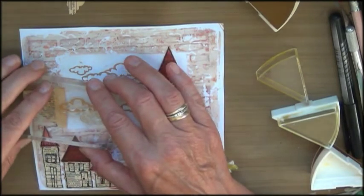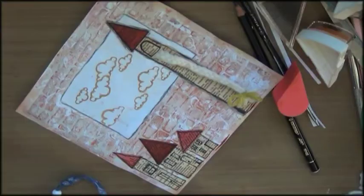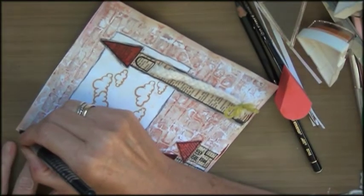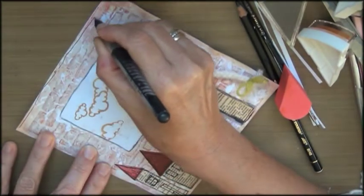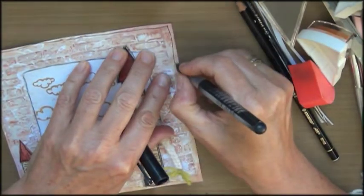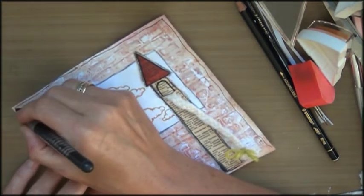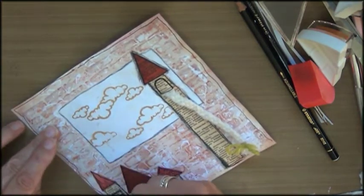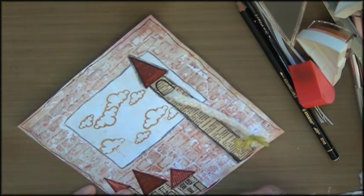And then I made some black lines on the window part and around the houses as well as on the border and around the whole page to give the page a finished look. And that's when I call my art journal page done.